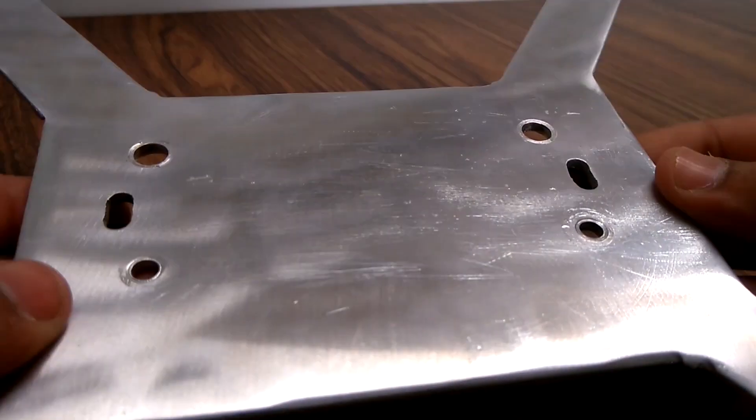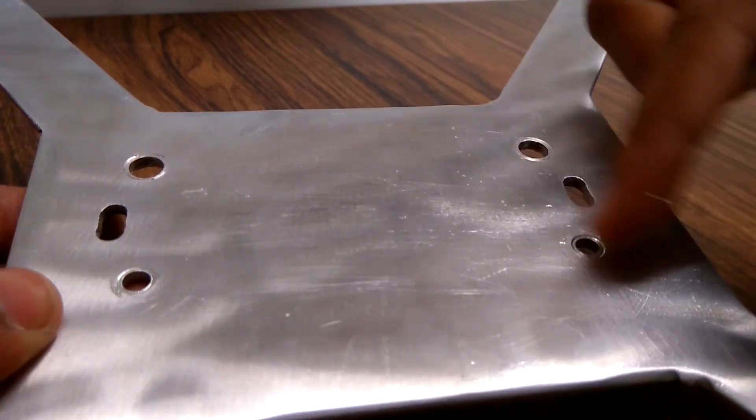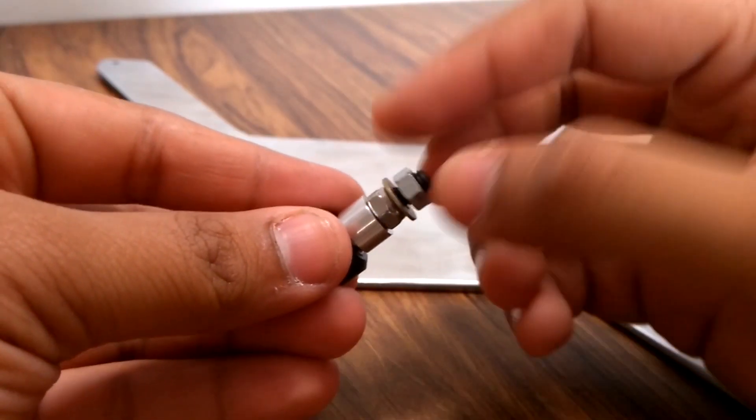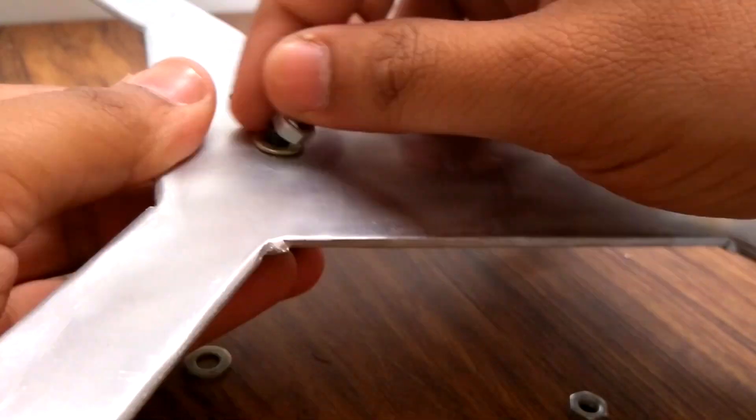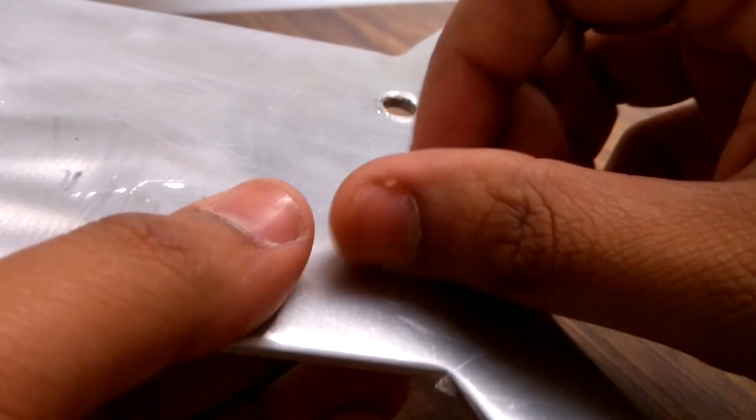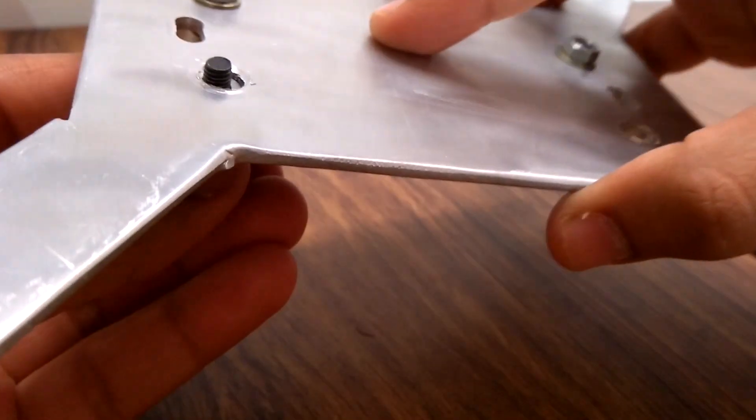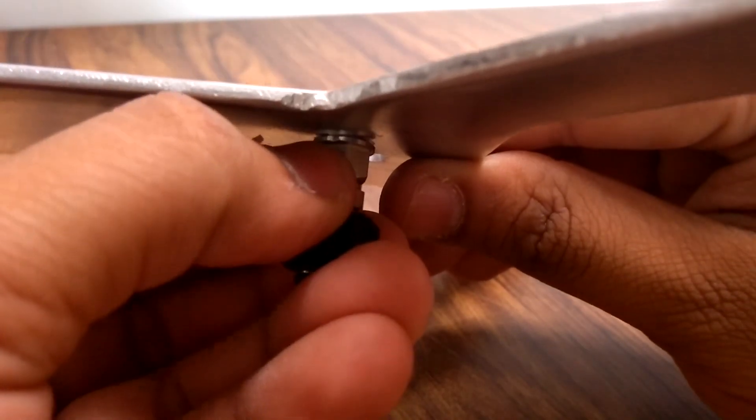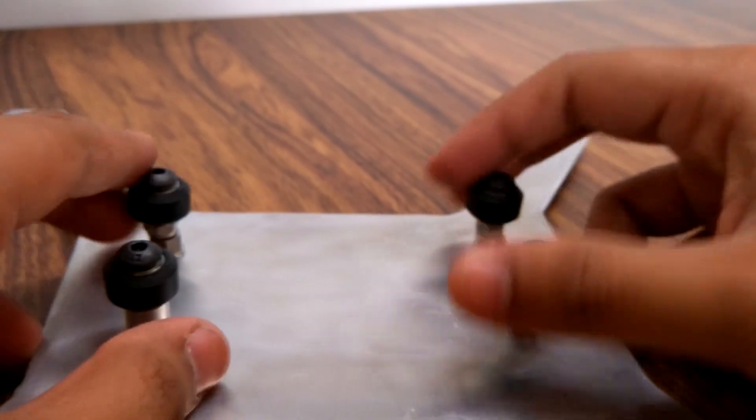I took the Y axis gantry plate. The bigger holes are for the eccentric nut and the smaller holes are for the nuts with spacer. I then attached the bolts to the plate accordingly. Make sure that the wheels rotate freely without any wobble.